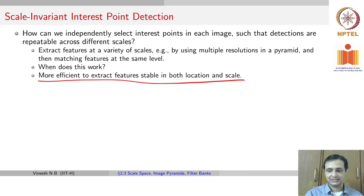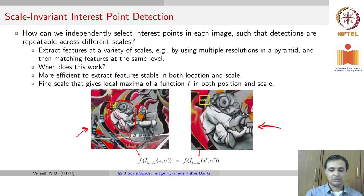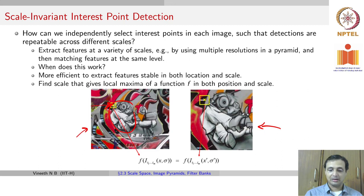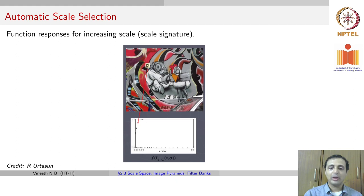We have two images that differ in scale — in one, an artefact (these are paintings) is quite small, and the right image is a zoomed-in version. We want to find the same corner, indicated by a yellow cross, in both images irrespective of scale. We want to find a function f which gives a maximum at both location x and sigma, where sigma denotes the scale.